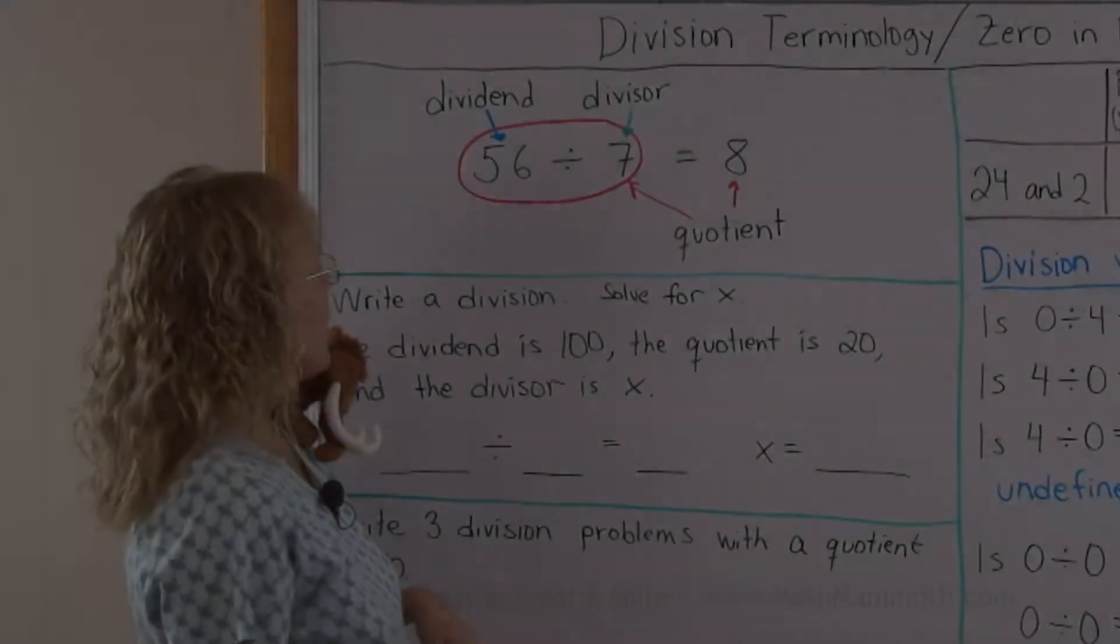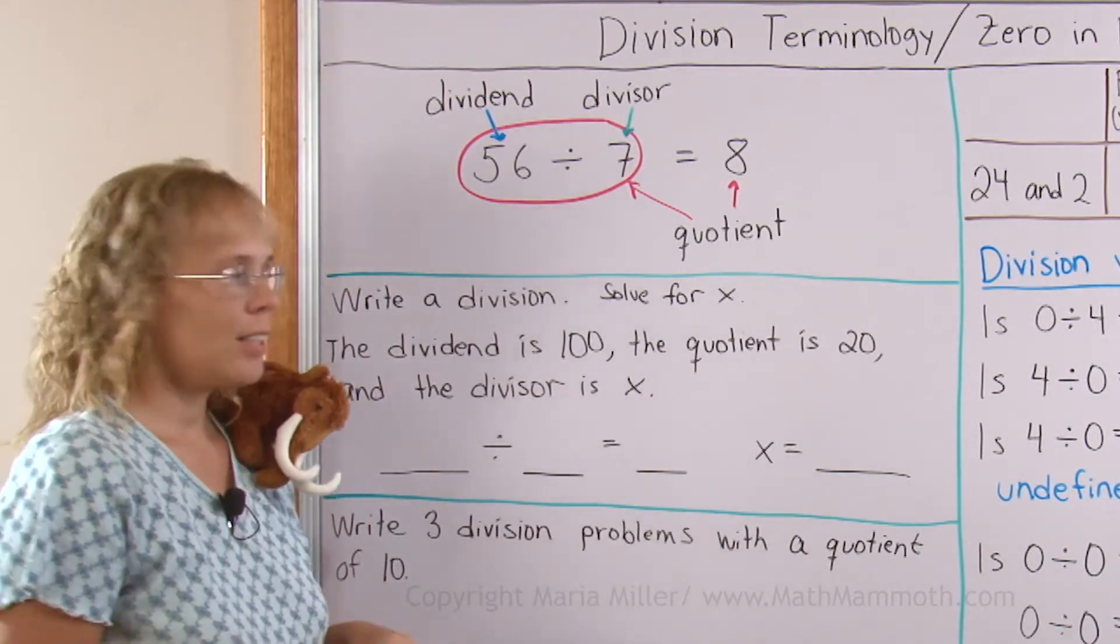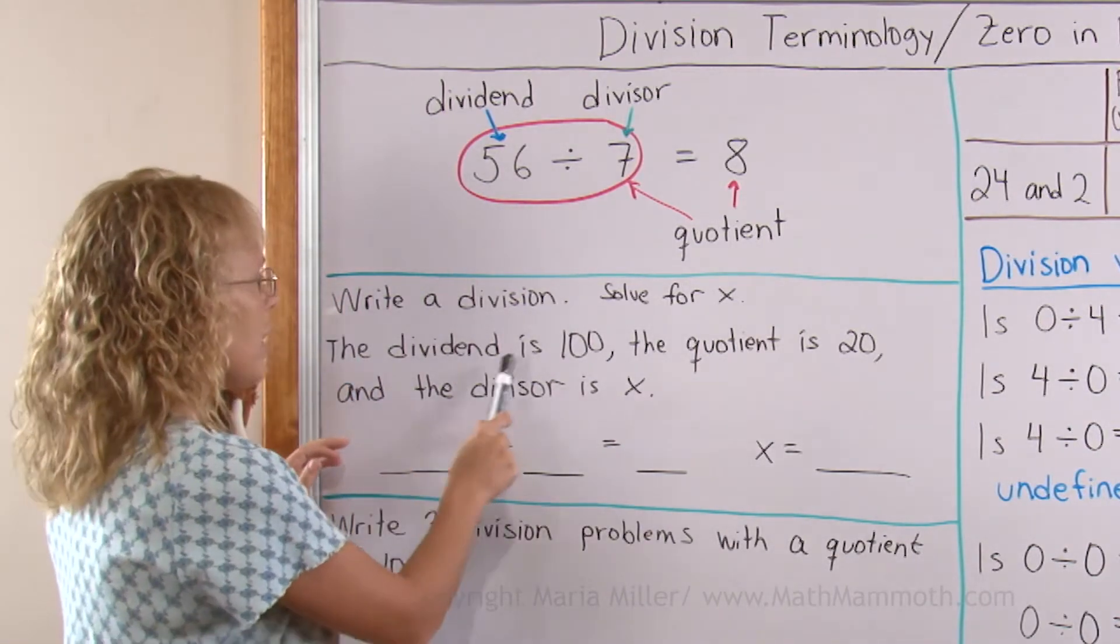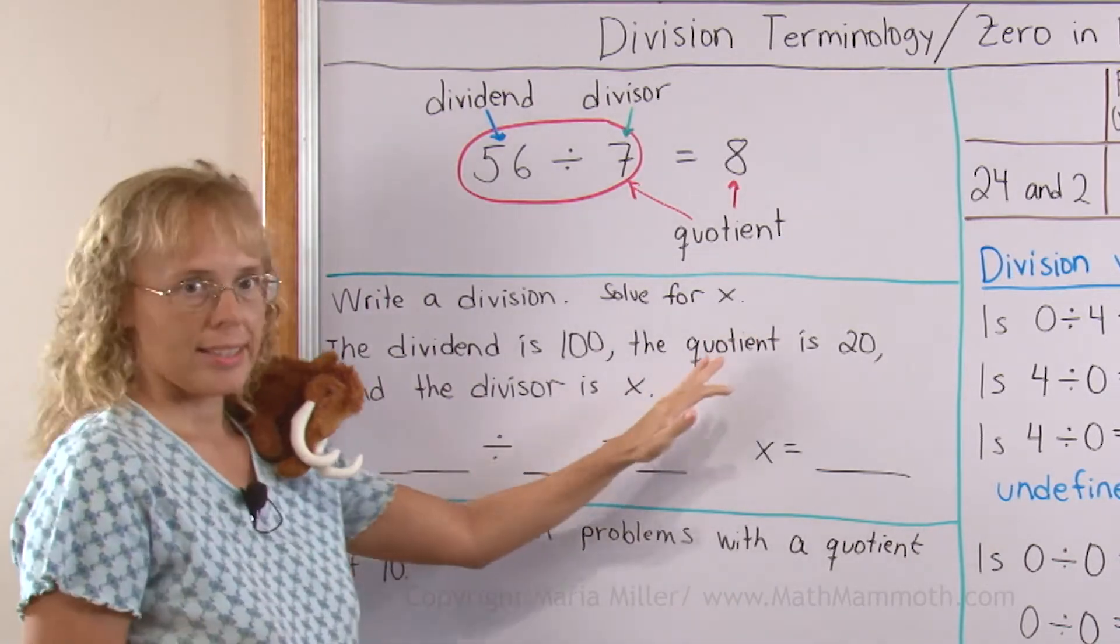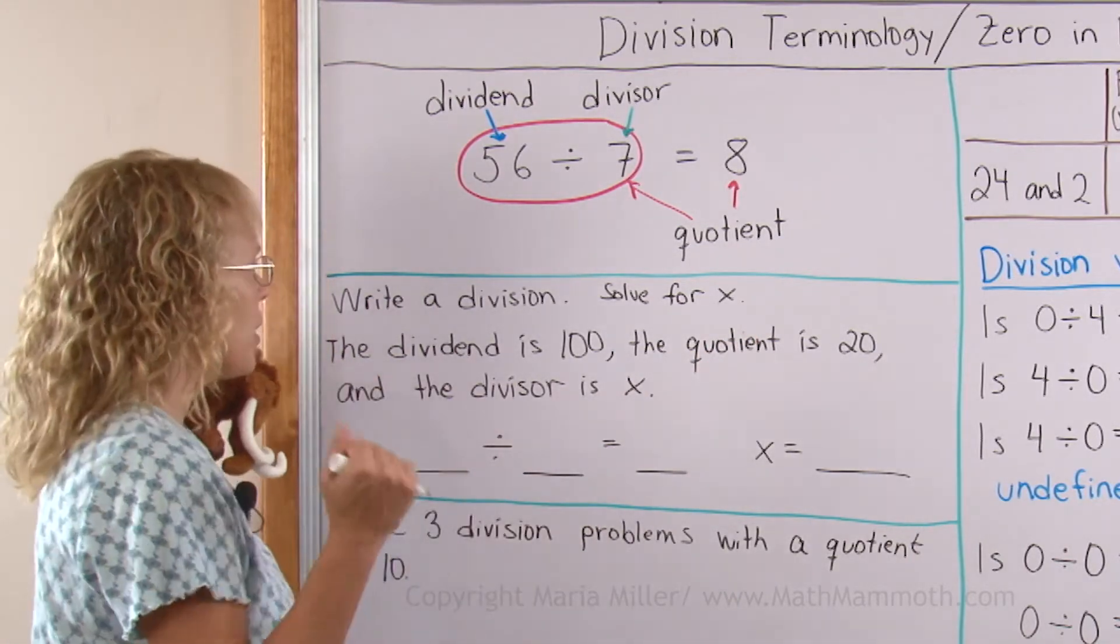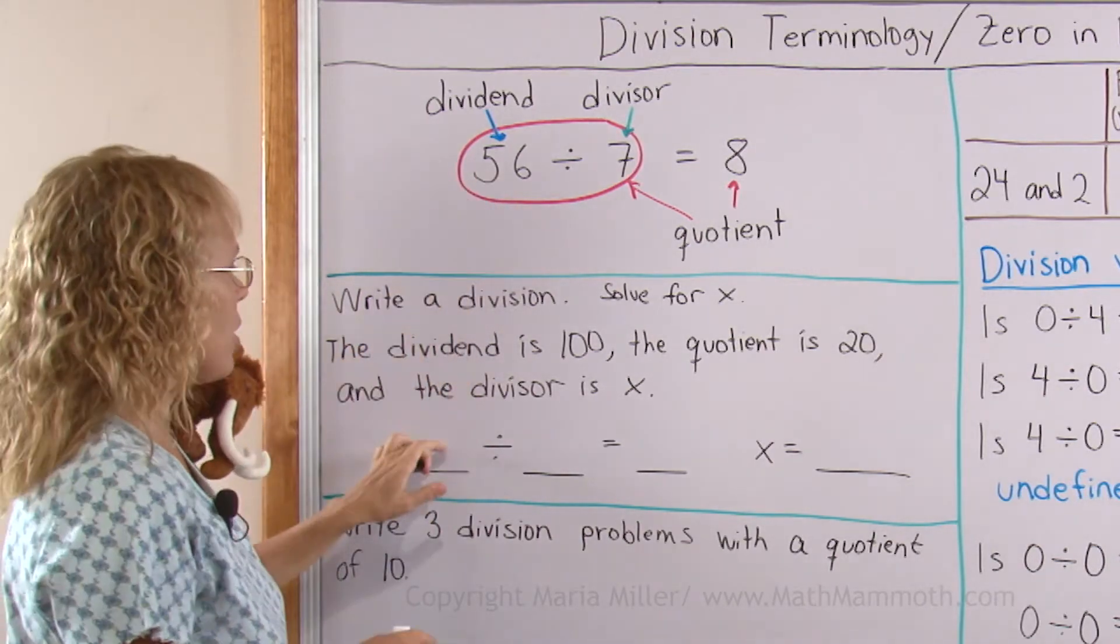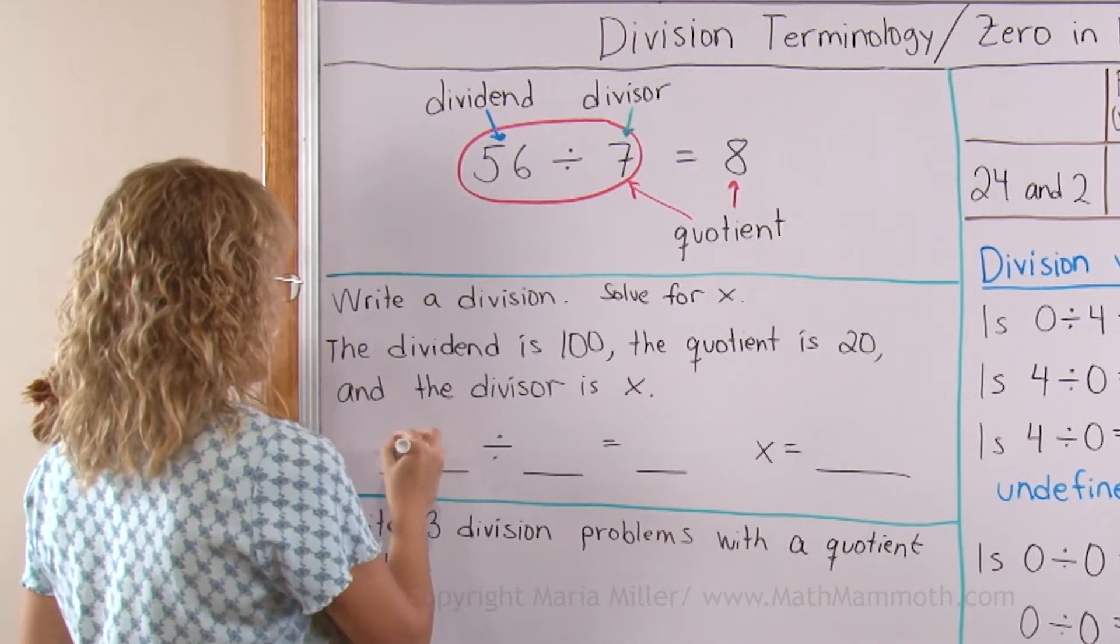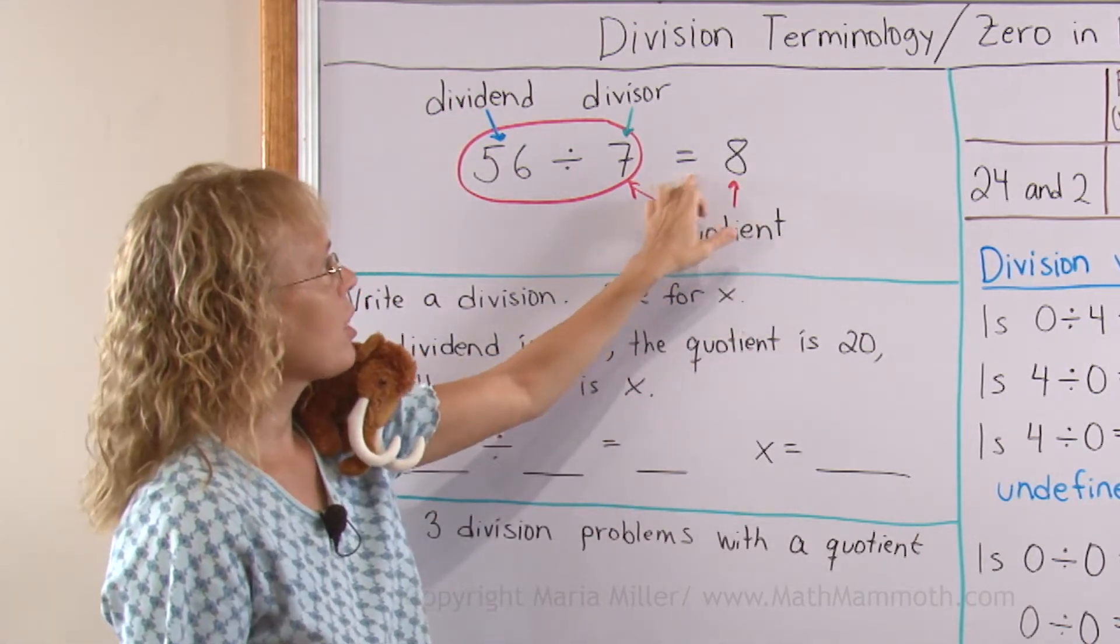Let's practice a little bit. Write the division and solve for x. And we are told that the dividend is going to be 100 and the quotient is 20 and the divisor is x. So I'll simply write dividend is the number we are going to divide. It goes first, 100 here.